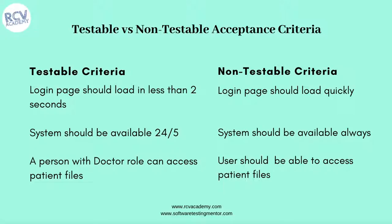A third example: a testable criterion is 'a person with a doctor role can access patient files,' clearly specifying which role has access. The non-testable version is 'user should be able to access patient files' — it's unclear which user is being referred to. The acceptance criteria must clearly define which user role should be allowed to access patient files and which should not, removing any ambiguity. If there is any, you need to clarify with the business analyst and stakeholders.